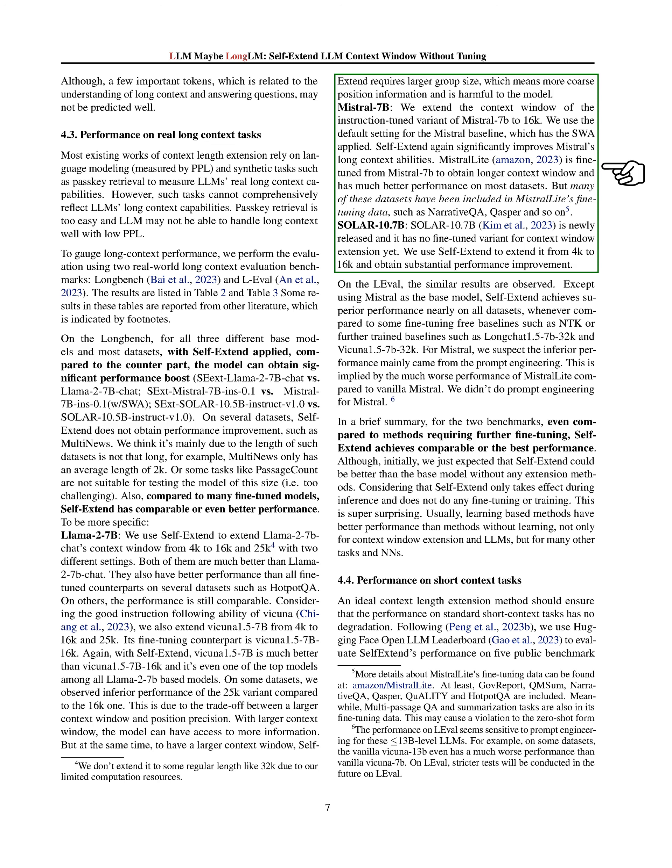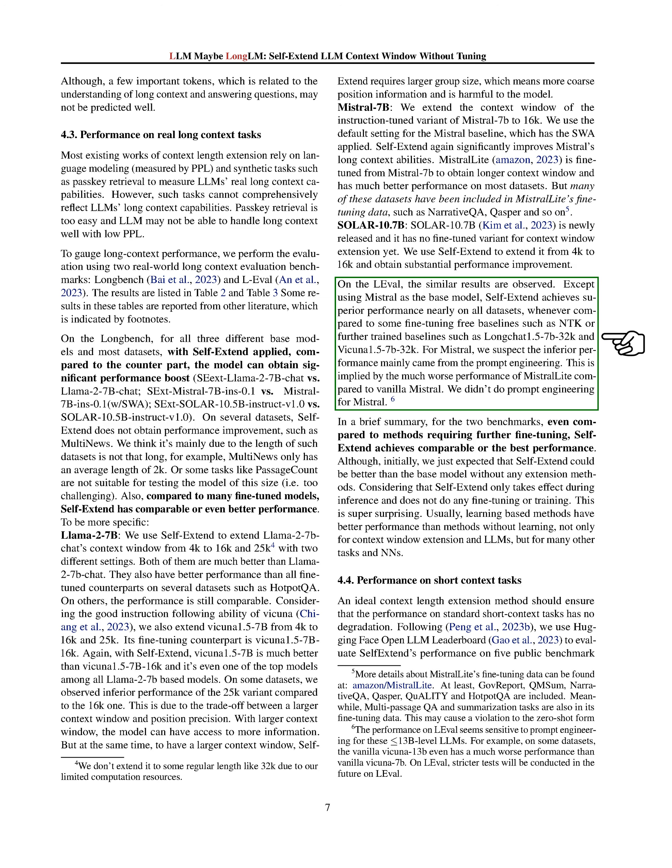We also extended the context window of the Mistral-7B model to 16,000 and found that Self-Extend significantly improved its ability to handle long contexts. The fine-tuned variant of Mistral-7B, Mistral-Lite, performed better on most datasets, but many of those datasets were included in the fine-tuning data for Mistral-Lite. Finally, we extended the context window of the newly released Solar-10.7B model from 4,000 to 16,000 and saw a substantial improvement in performance. Our Self-Extend method performed comparably or better than methods that require further fine-tuning, which was surprising since we initially only expected Self-Extend to outperform the base model. Considering that Self-Extend only takes effect during inference and doesn't require any fine-tuning or training, this is a significant achievement.